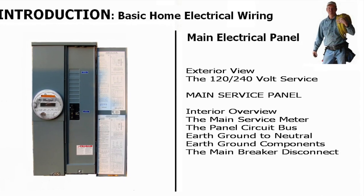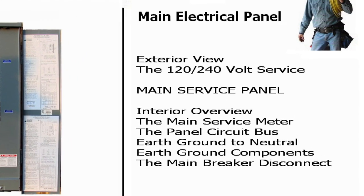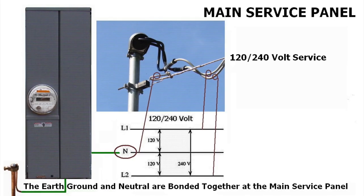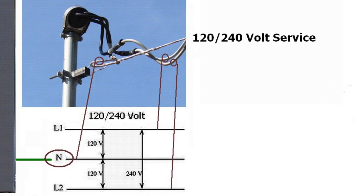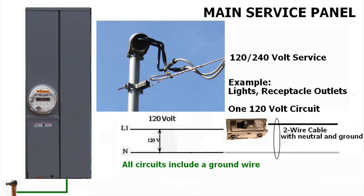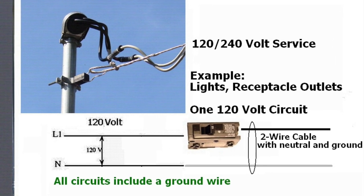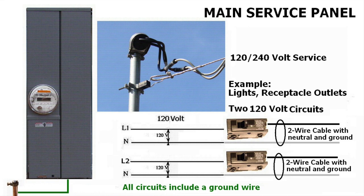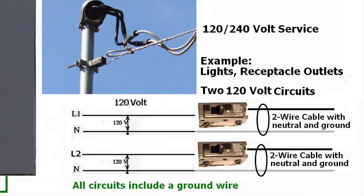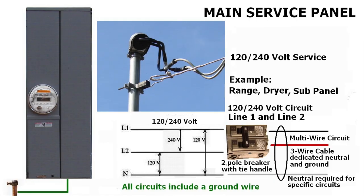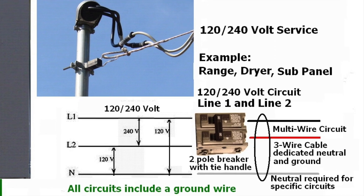Then we get into the main electrical panel. We give you an exterior view of a 120 and 240-volt service showing the main service panel, then an interior overview showing the main service meter, the panel circuit bus, the earth-to-ground and neutral system, the earth ground components, and the main breaker disconnect. We then explain what all of this means and how it applies to the circuits in your panel, and what 120 and 240 volts means for circuits going out to various areas of the home.